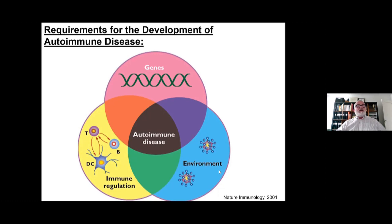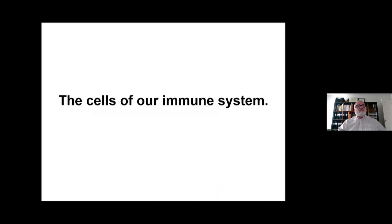One of the most important aspects of autoimmunity are the environmental factors. These include infectious disease, but they could also include toxins and pollution. The environment plays a really important role, potentially as the trigger of autoimmunity. So you really need these three things coming together in order for a particular person to become autoimmune.